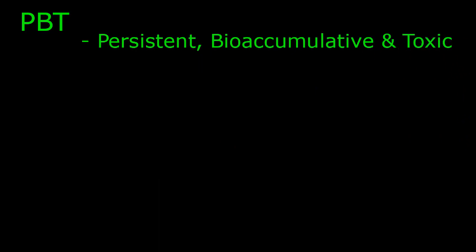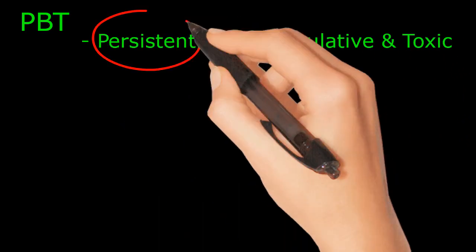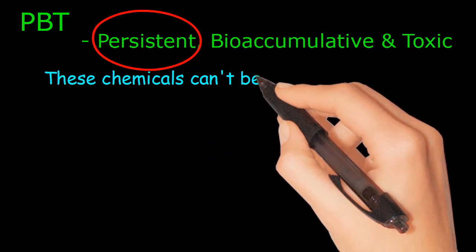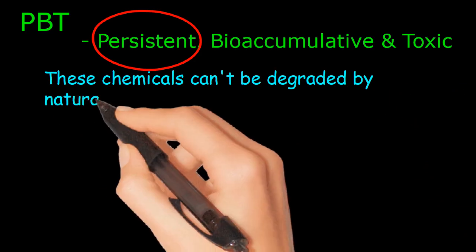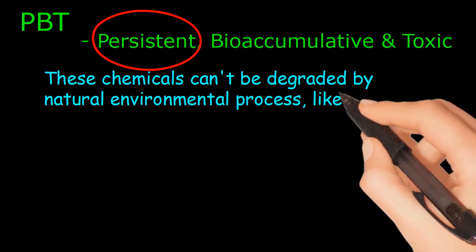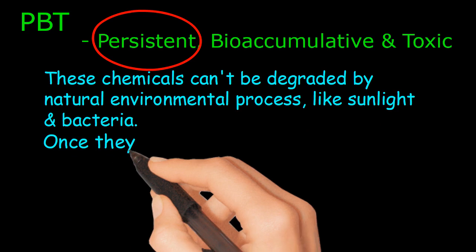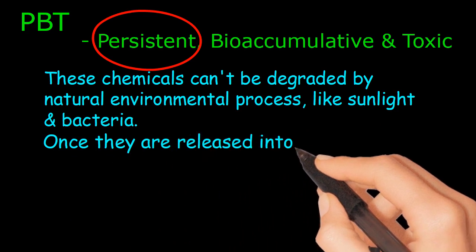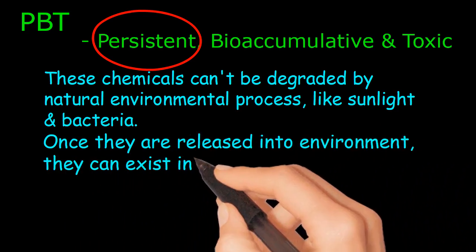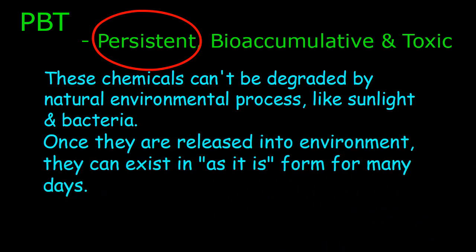What are persistent chemicals? These chemicals can't be degraded by natural environmental processes, like sunlight and bacteria. Once they are released into the environment, they can exist in their original form for many days.